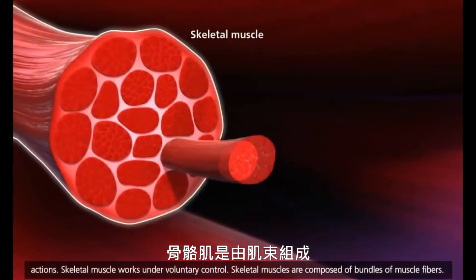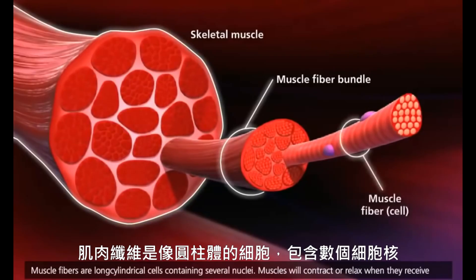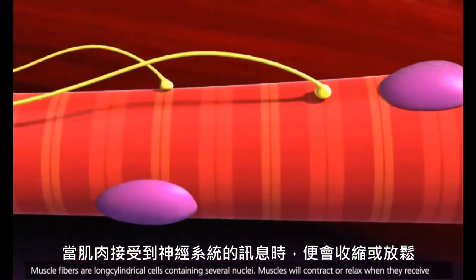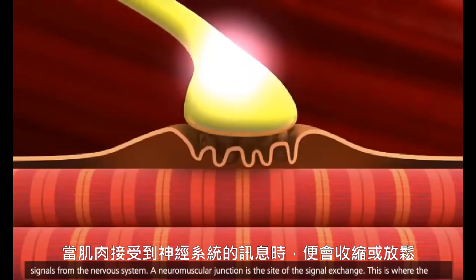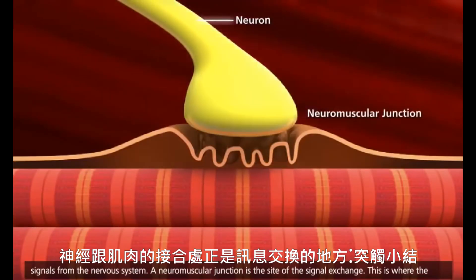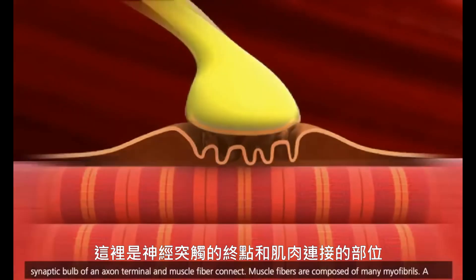Skeletal muscles are composed of bundles of muscle fibers. Muscle fibers are long cylindrical cells containing several nuclei. Muscles will contract or relax when they receive signals from the nervous system. A neuromuscular junction is the site of the signal exchange — this is where the synaptic bulb of an axon terminal and muscle fiber connect.